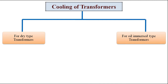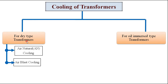In the dry type, the assembled transformer is not immersed in oil in a tank. Whereas in the oil immersed type, as the name itself suggests, the assembled transformer unit is immersed in oil. For the dry type transformer, we use two different methods: one is air natural cooling, in short called AN, for small capacity transformers. The other method is air blast cooling.